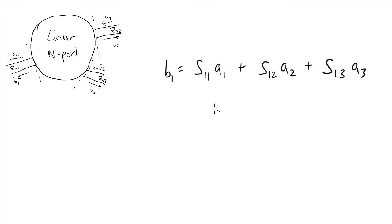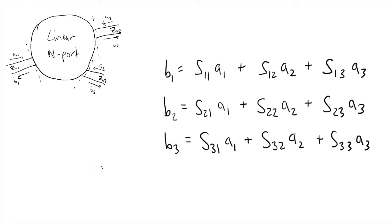So looking at the first row, S11 represents how much port A reflects back on itself. S12 tells you how much an input from port 2 comes out of port 1. In the second row, S21 is the coupling factor from port 1 to port 2. And so on.